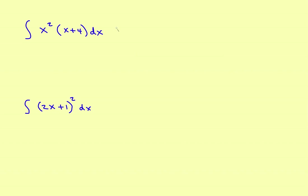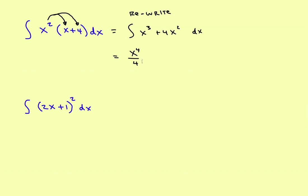Sometimes you have to rewrite before you work on an integral. In this case, distribute x squared: x squared times x gives x cubed, and x squared times 4 gives 4x squared. So you rewrite it as the antiderivative of x cubed plus 4x squared dx. Now apply the rule: the antiderivative of x cubed is x to the 4th divided by 4, plus 4 times x cubed divided by 3, plus C. The final answer is one-fourth x to the 4th plus four-thirds x cubed plus C.